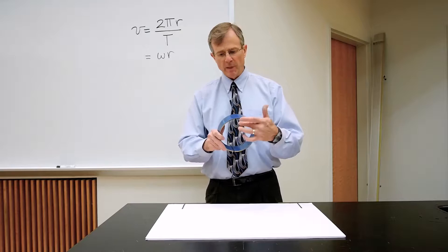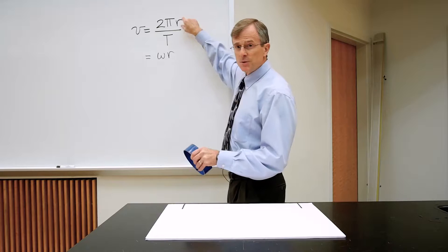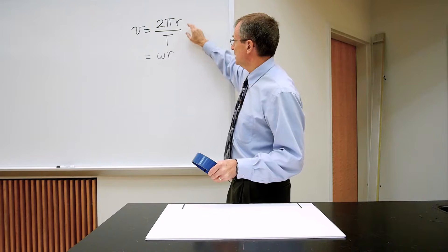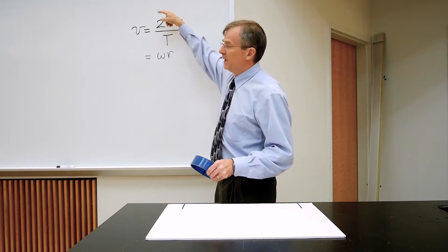That distance is the circumference of the circle, which is 2π times the radius. So the distance traveled is 2πr, the circumference, divided by time. That's velocity: distance divided by time.